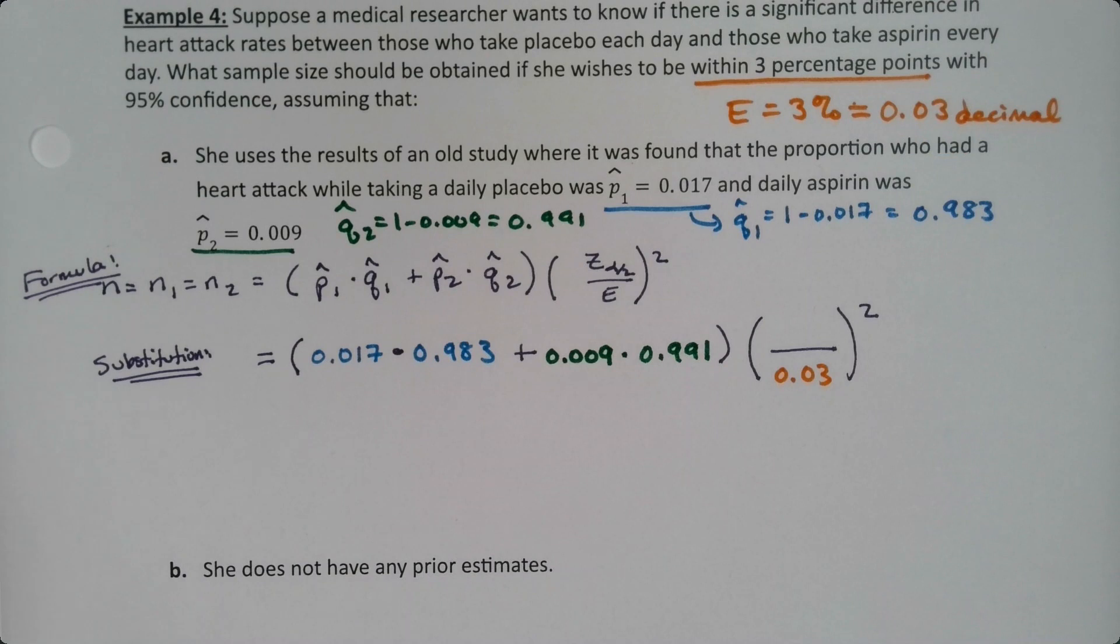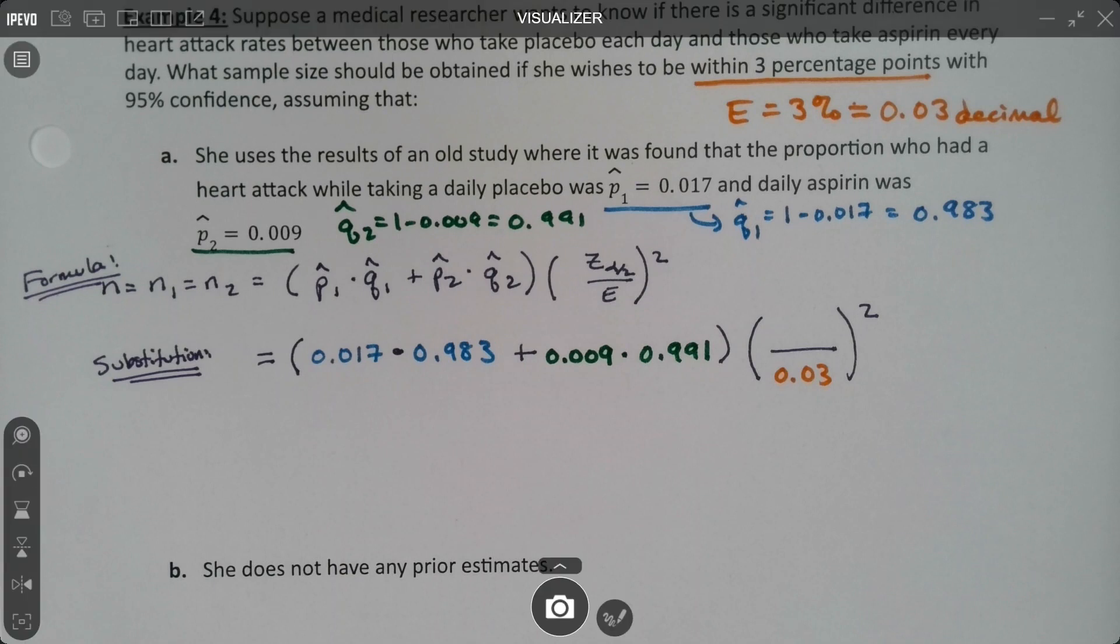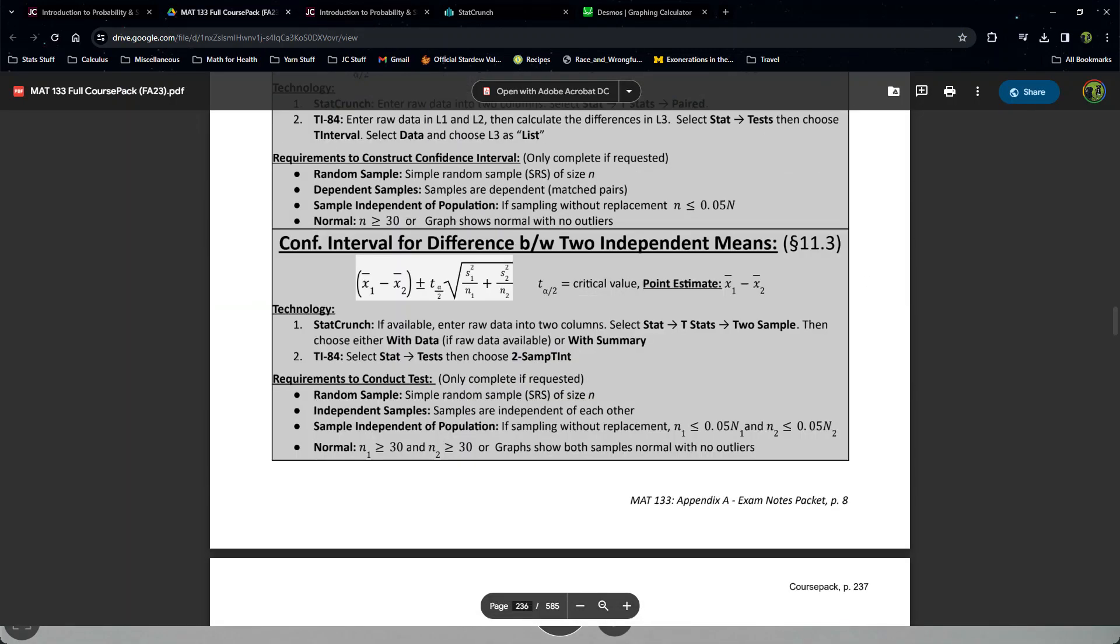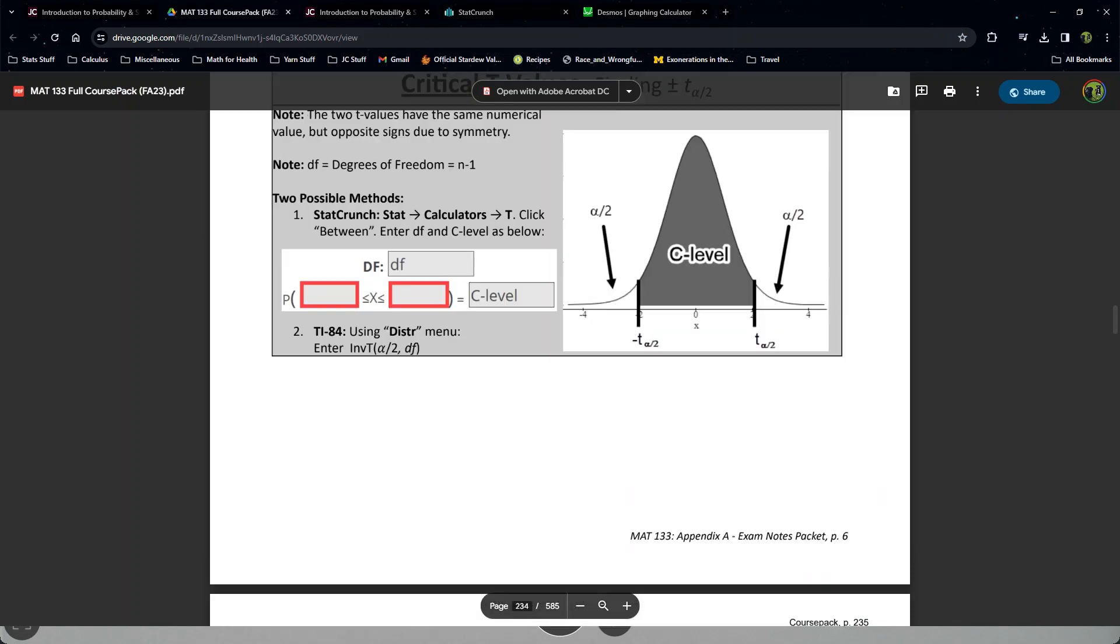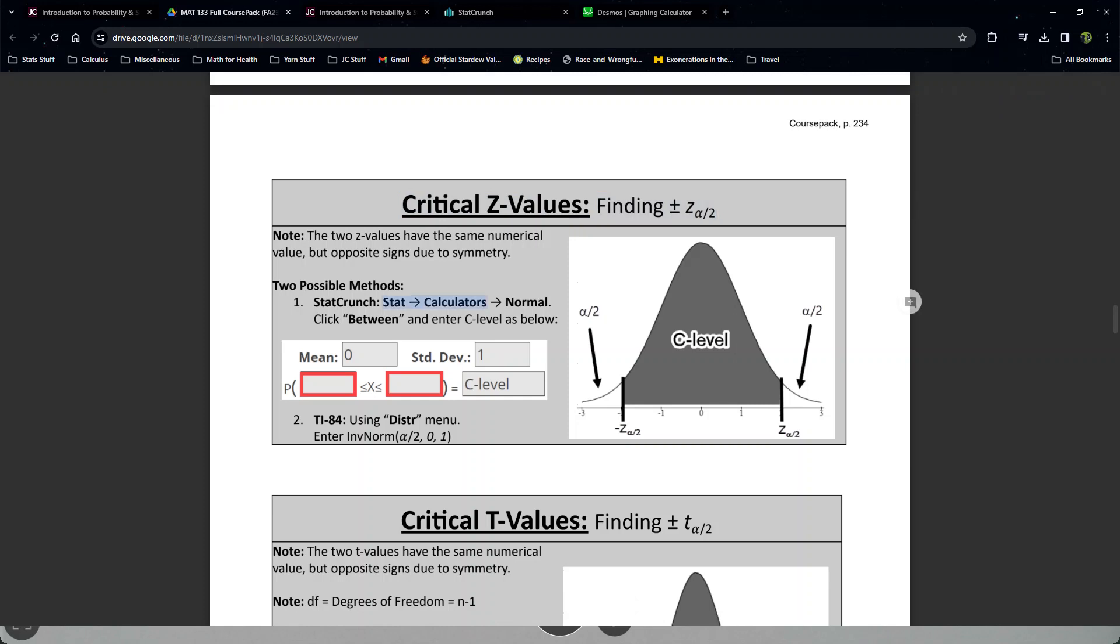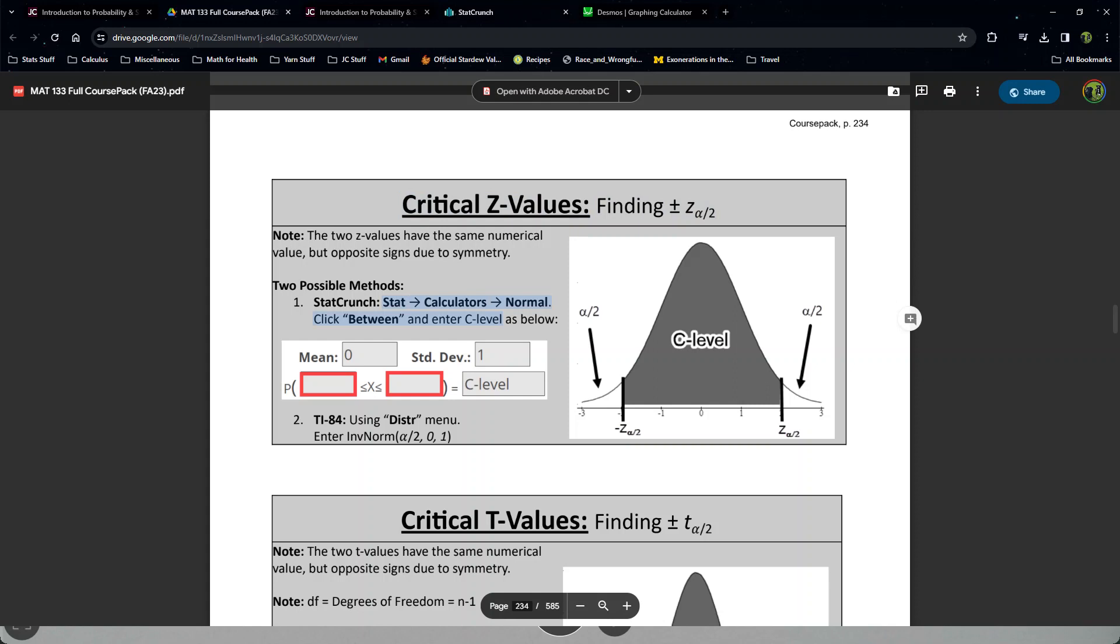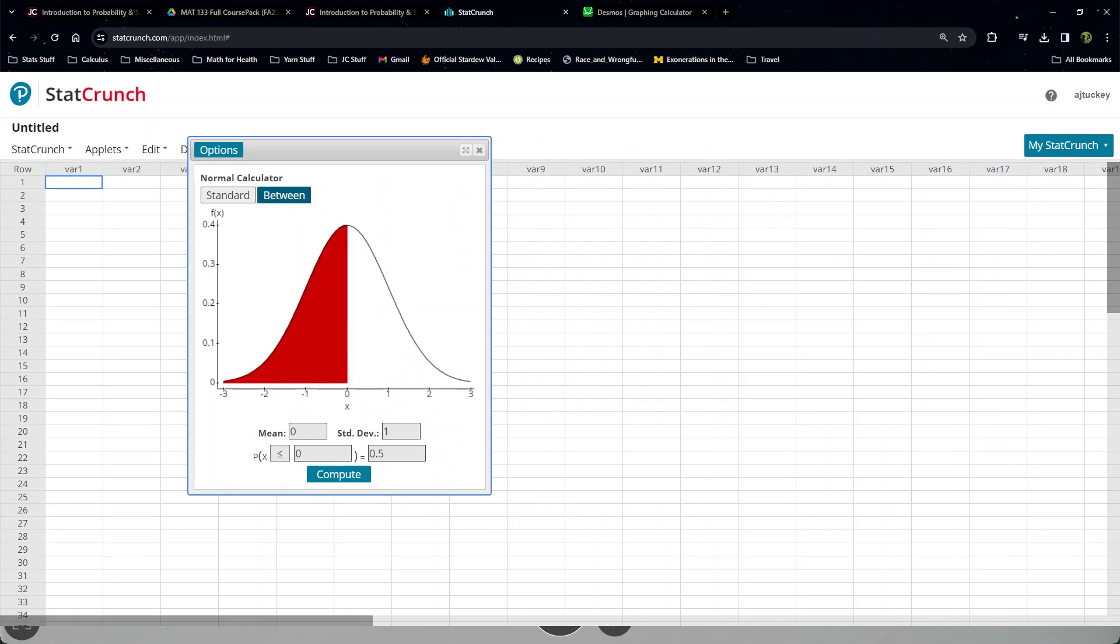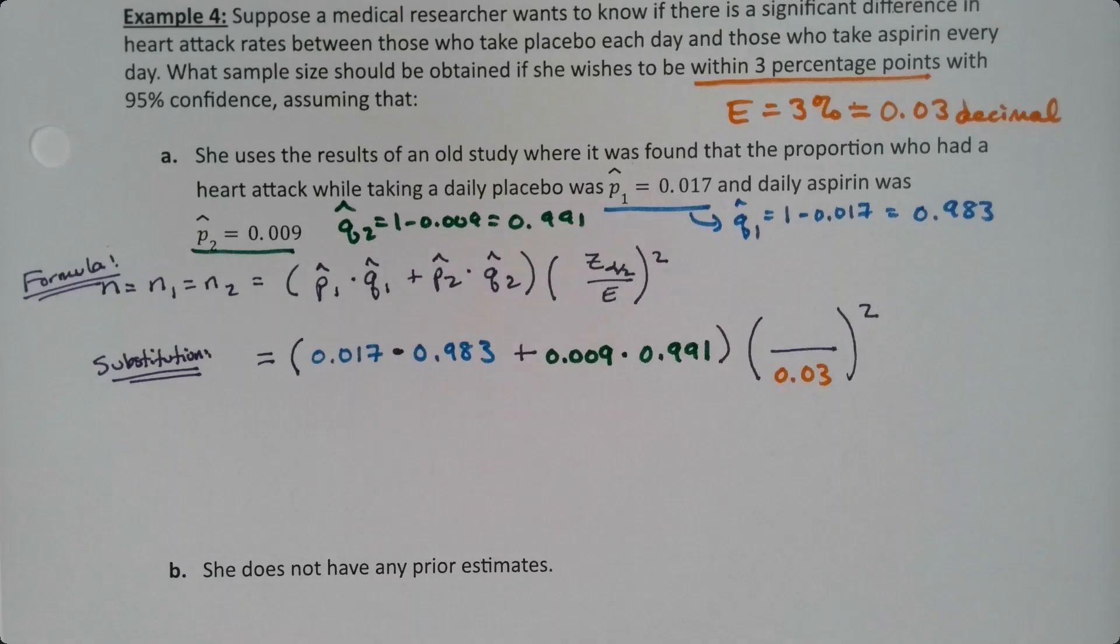Alright, now what about the Z? Where do I get Z from? Well, it's been a while. But Z, we learned how to find that back in chapter 7. But it's in our exam notes packet. I put it in really large font. Critical Z values. Z alpha over 2. It's right here. So it says go to stat calculators normal, and you click between. Okay, so let me grab StatCrunch. Stat calculators normal. I'm going to click between. 0 and 1 are always set in stone, but I put in the confidence I have, which is 0.95, and I get 1.96.